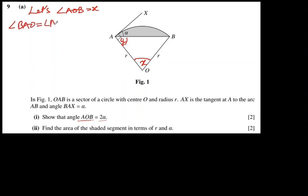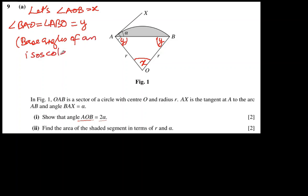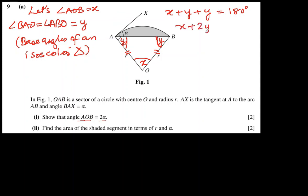The angles here — angle BAO and angle ABO — are both equal to Y. These two angles are equal because they are the base angles of an isosceles triangle. In mathematics, whenever we write something we should give a reason. These angles are equal because this is an isosceles triangle, as both sides are radii of the sector. So in the triangle, X plus 2Y equals 180 degrees, giving us X equals 180 minus 2Y.